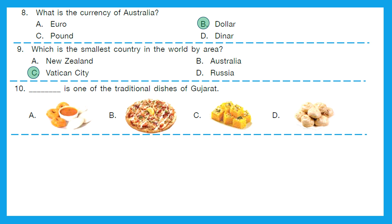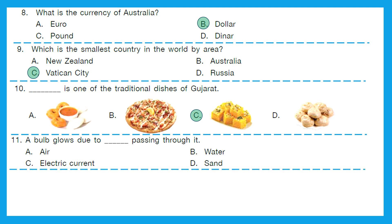Question 10: One of the traditional dishes of Gujarat is Dhokla. Option A looks like Idli and Vada, option B is Peza, option C is Dhokla, and option D looks like Momos. The right answer is option C, Dhokla. Question 11: A bulb glows due to what passing through it? We switch on the power and electricity goes inside the filament, so the bulb glows. The right answer is option C, electric current.